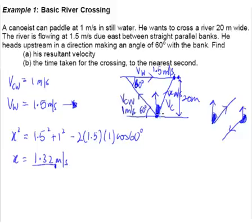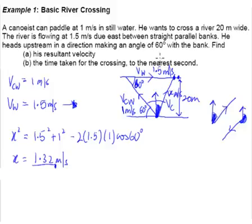In our case, V_C is our vector, pointing upwards, so the tail of the arrow is at the starting point. This is the bearing we're interested in. Looking at the triangle, we have the 60-degree angle and we know the side opposite is 1.5 meters per second. We can use the sine rule to find this angle.